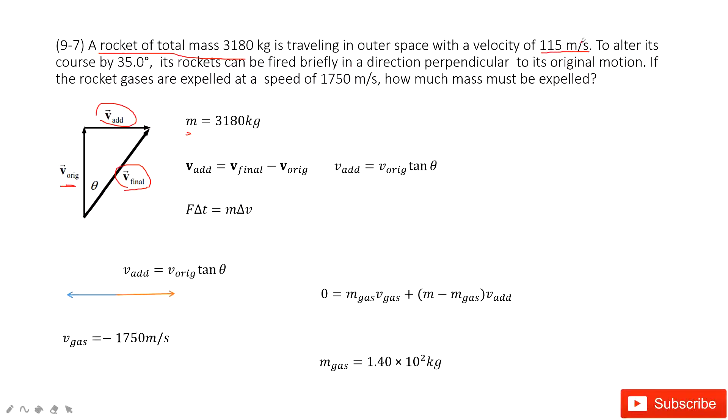This is what the sentence tells us. So from this sentence, we can draw this triangle. This is the original velocity. And then finally, the velocity should make an angle of 35 degrees with the initial velocity. And the added velocity is just perpendicular to the original velocity.